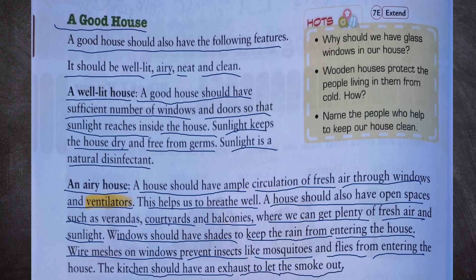Why should we have glass windows in our house? We should have glass windows so that sunlight can enter the house. Sunlight keeps the house dry and free from germs because sunlight is a natural disinfectant.